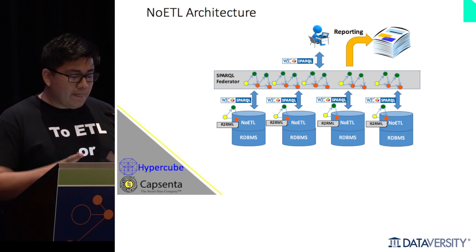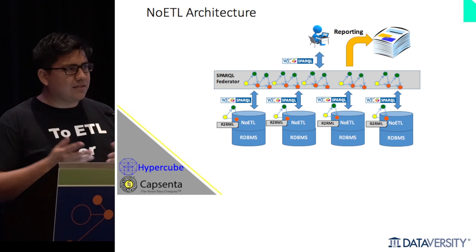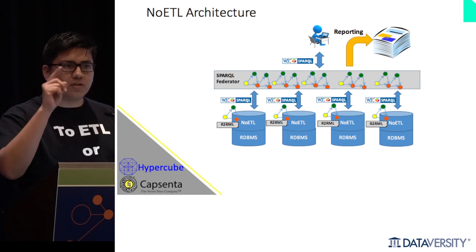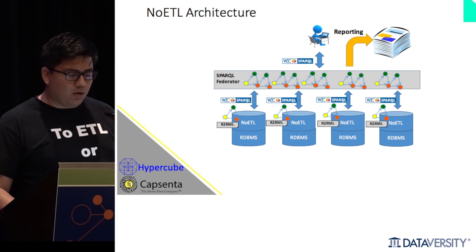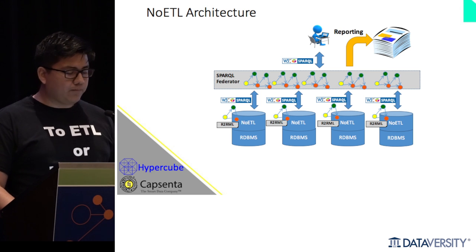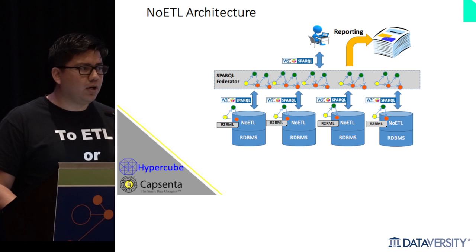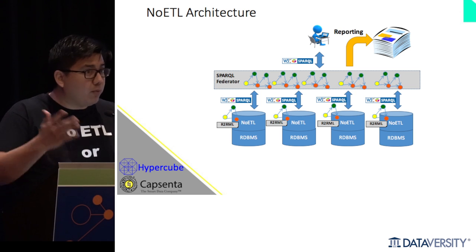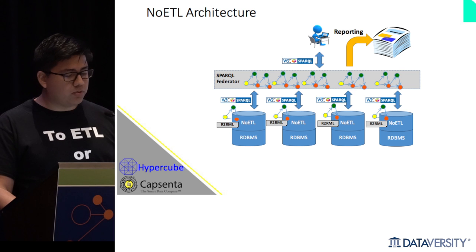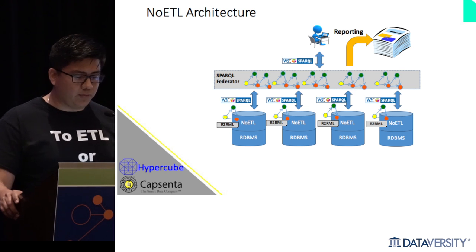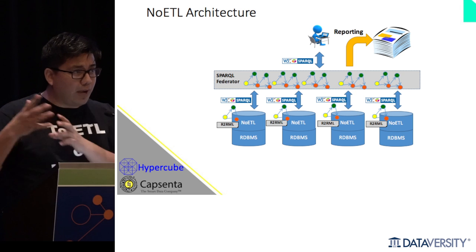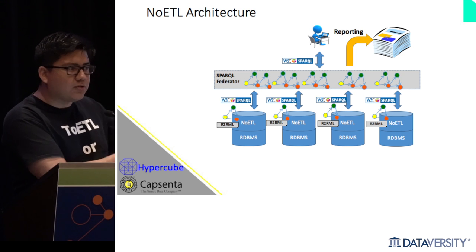In the ETL approach, you run an ETL using these mappings, generate the RDF, and load it into a triple store — Stardog is one example. Then you can run SPARQL queries directly onto that triple store. In this case you have a copy of the data, but now that data is also in terms of the target, which is FIBO. In the no-ETL approach, a virtual triple store stands up. You think it's a triple store, you can query it like a triple store, but it's still your relational database underneath.